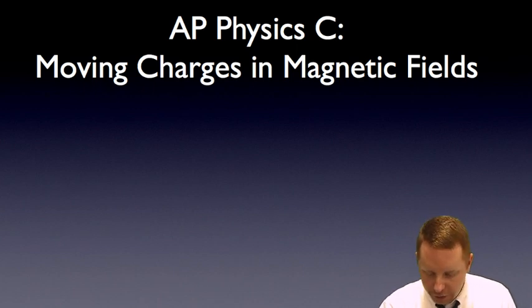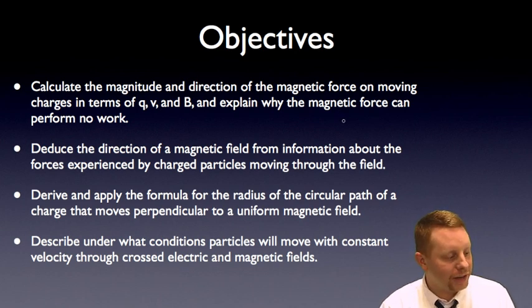Our objectives are going to be to calculate the magnitude and direction of the magnetic force on moving charges in terms of charge, velocity, and magnetic field strength, and explain why the magnetic force can perform no work.